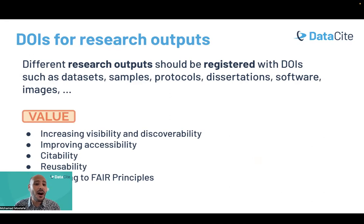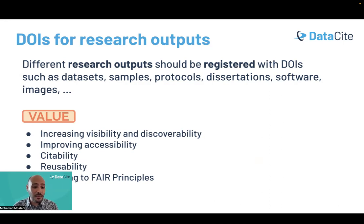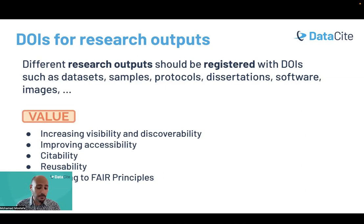Why should we use DOIs for this wide range of research outputs? First, using digital object identifiers increases visibility and discoverability, improves accessibility, and enhances the ability to get citations. It also enhances reusability for all your research outputs and resources — a very important point when we talk about open science. In the context of datasets, using digital object identifiers is aligned with all the FAIR principles.